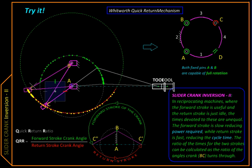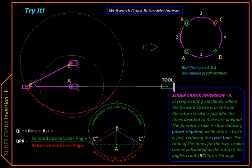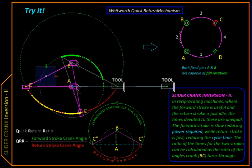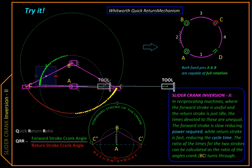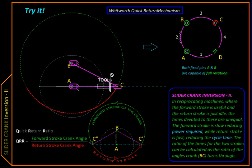The tool is in the rightmost extreme when our input link BC is over here. Then we will retract it back, so it will go towards its leftmost position over here when BC is in this position.